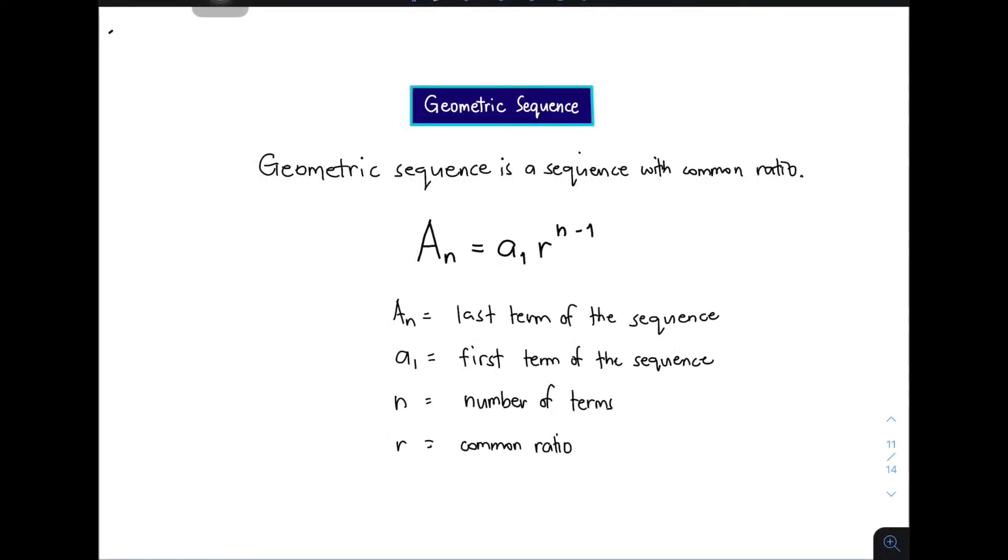Now, after defining geometric sequence, here is the common formula: A_n = a_1 × r^(n-1). Let me explain the variables because it's important to know them before using the formula. A_n is the last term of the sequence, a_1 is the first term, n is the number of terms within the sequence, and r is the common ratio.